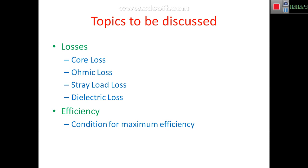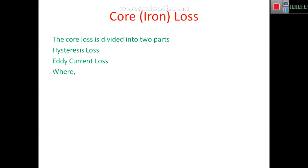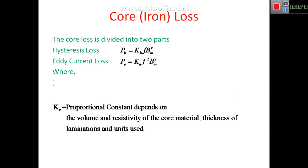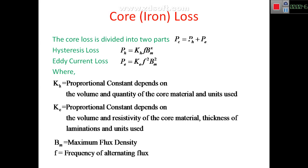Coming to core loss, the core loss is divided into two parts: hysteresis loss and eddy current loss. PC is equal to PH plus PE, where PH is the hysteresis loss which is equal to KH times BM to the power of X, and eddy current loss PE is equal to KE times F squared times BM squared.